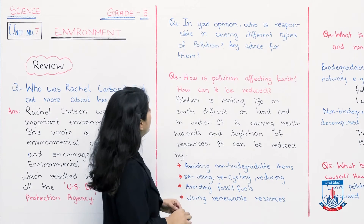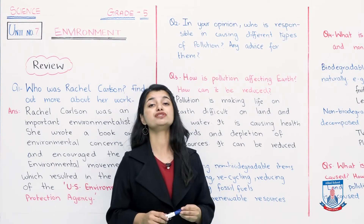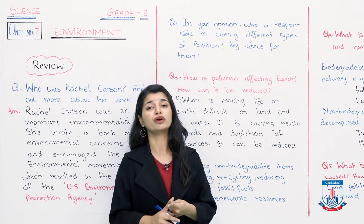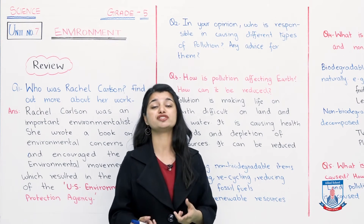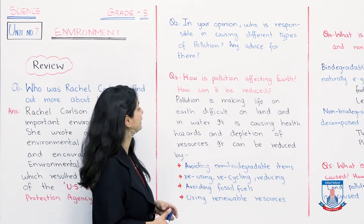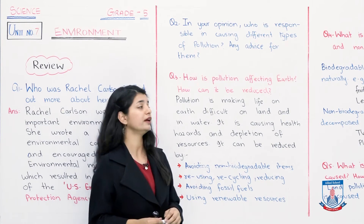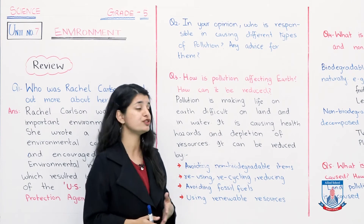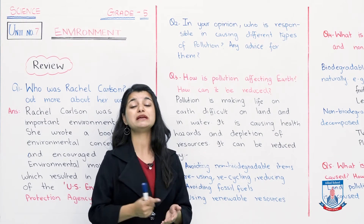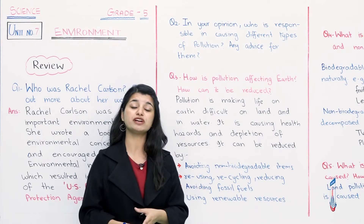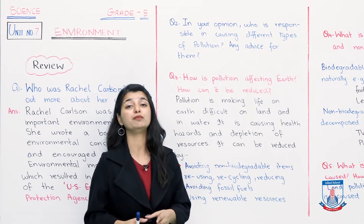With that, we will answer question number 3: how is pollution affecting earth, and how can it be reduced? You can write pages and pages because time and again in this chapter we have talked about what pollution is and its impact on earth. Because of pollution, people have health problems, living conditions are bad, global warming occurs, your environment is bad, and your breathing air is bad. A limited answer: pollution is making life on earth difficult on land and in water. It is causing health hazards and depletion of resources. Water is a very important resource, but when it is polluted it is not capable of our use — our resources are depleted.